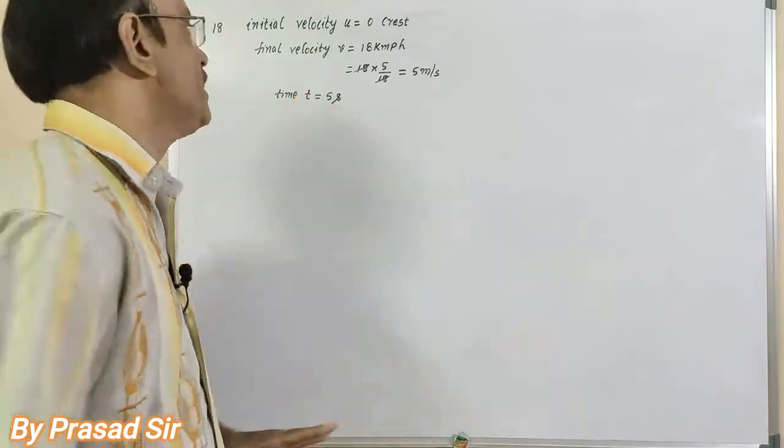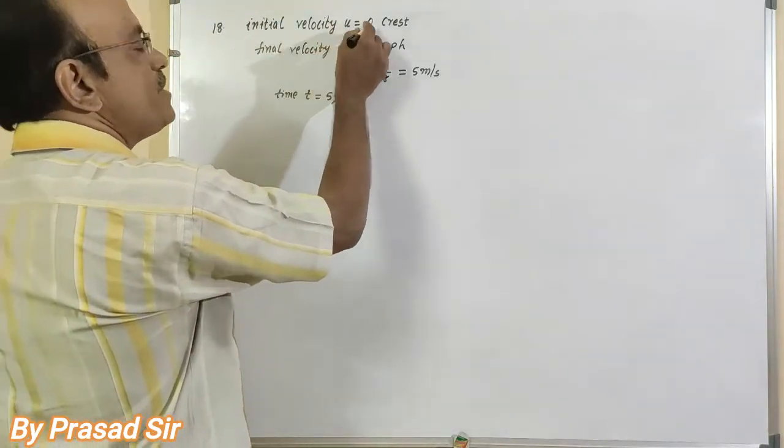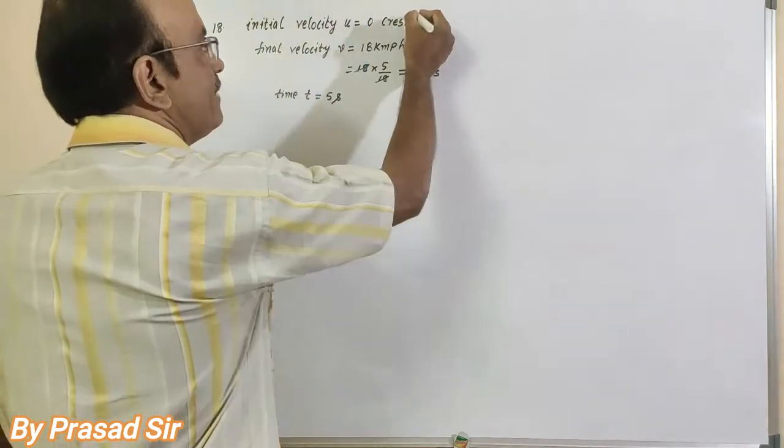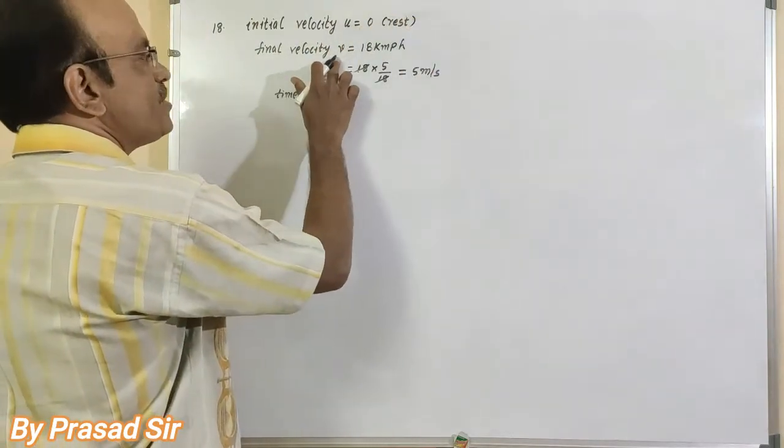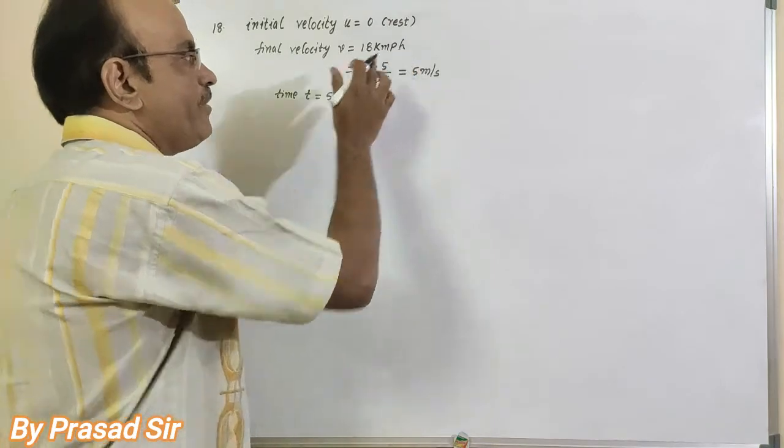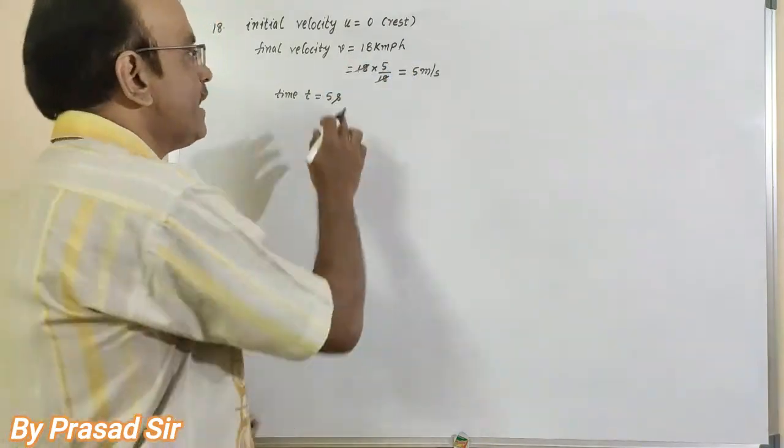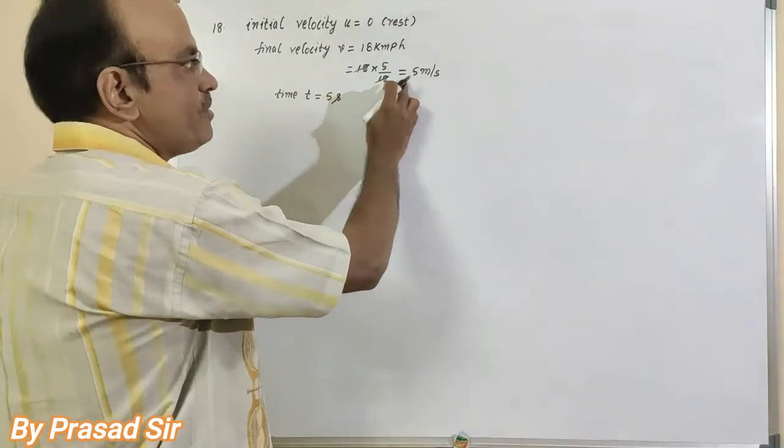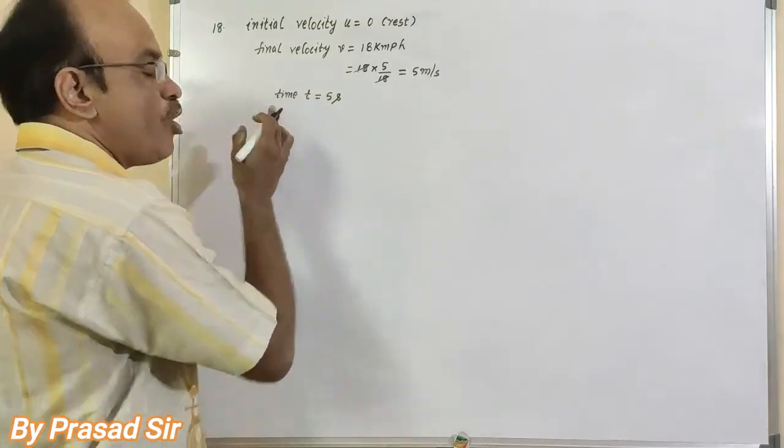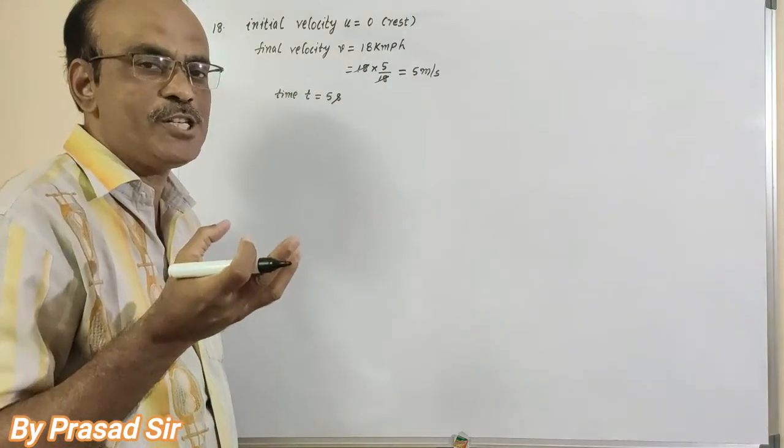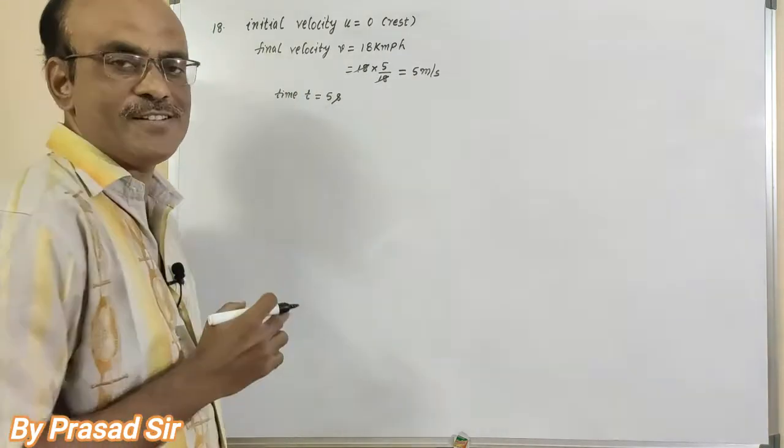Given: initial velocity u is equal to 0, which is at rest, and final velocity v equals 18 kilometers per hour. Convert into meters per second: 18 into 5 by 8 fraction, that is 5 meters per second. How much time is taken to acquire that much velocity? 5 seconds.